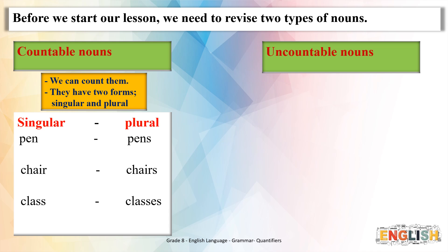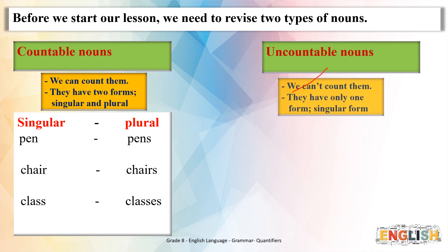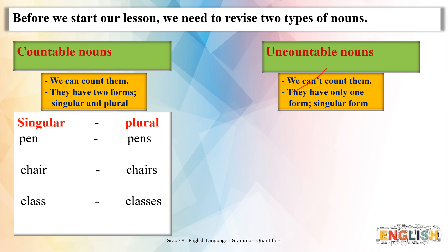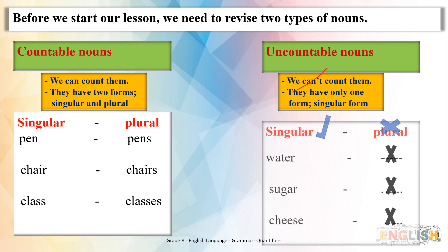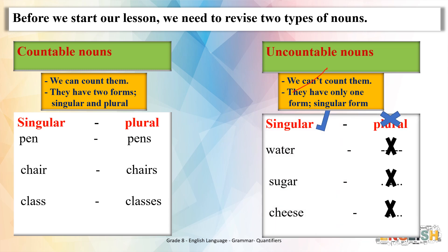As for uncountable nouns, these are nouns that we can't count. They have only one form — singular. For example: water, sugar, cheese. They are all in the singular form because we can't count them.